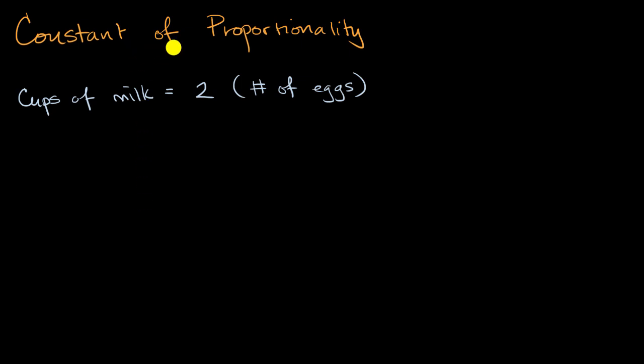So what do you think the constant of proportionality is here, sometimes known as the proportionality constant? Well yes, it is going to be two. This is a proportional relationship between the cups of milk and the number of eggs. The cups of milk are always going to be two times the number of eggs. Give me the number of eggs, I'm going to multiply it by the constant of proportionality to get the cups of milk.